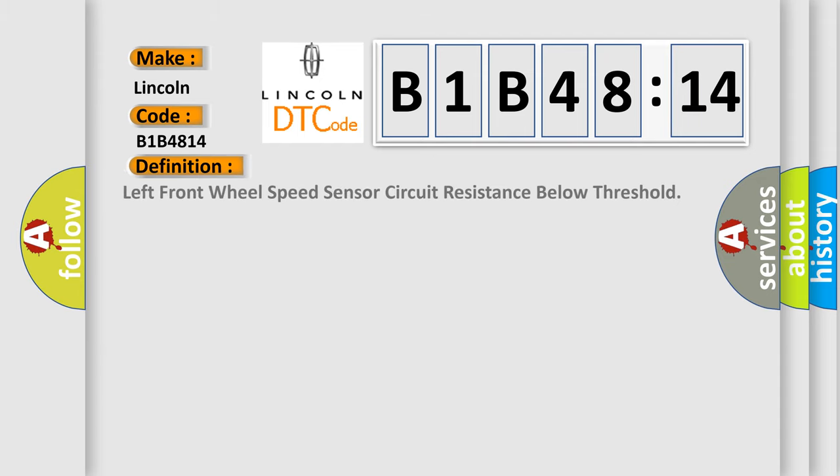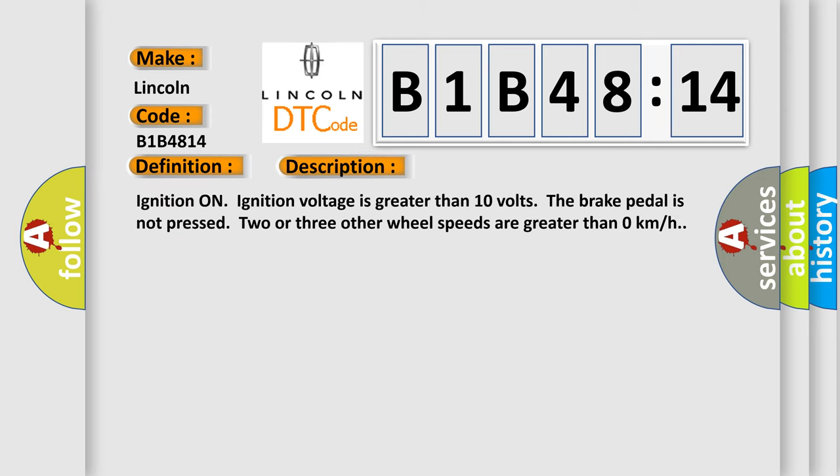The basic definition is left front wheel speed sensor circuit resistance below threshold. Here is a short description of this DTC code: ignition on, ignition voltage is greater than 10 volts, the brake pedal is not pressed, two or three other wheel speeds are greater than zero kilometers per hour.